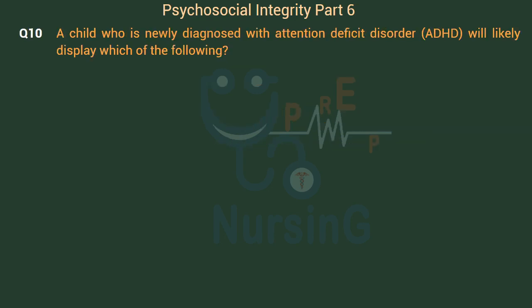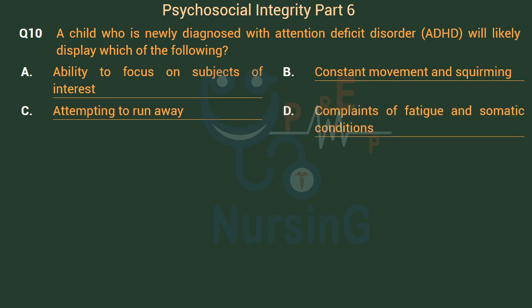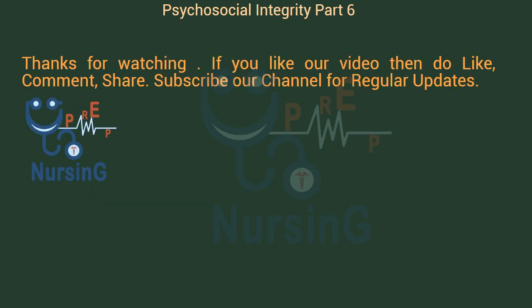A child who is newly diagnosed with attention deficit hyperactivity disorder (ADHD) will likely display which of the following? Option A: Ability to focus on subjects of interest. Option B: Constant movement and squirming. Option C: Attempting to run away. Option D: Complaints of fatigue and somatic conditions. The right answer is Option B — Constant movement and squirming. Constant movement and squirming are indications of ADHD. Other signs include inability to pay attention to directions or details, talking all the time even when inappropriate, and being easily distracted. Somatic complaints and running away are indicative of emotional distress.